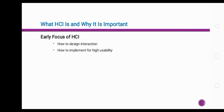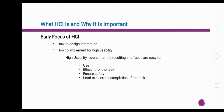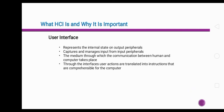The early focus of HCI was on how to design interaction and how to implement it for high usability. High usability means that the resulting interfaces are easy to use, efficient for the task, ensure safety, and lead to a correct completion of the task. The user interface represents the internal state on output peripherals, captures and manages input from input peripherals, and is the medium through which communication between human and computer takes place. Through the interfaces, user actions are translated into instructions that are comprehensible for the computer.